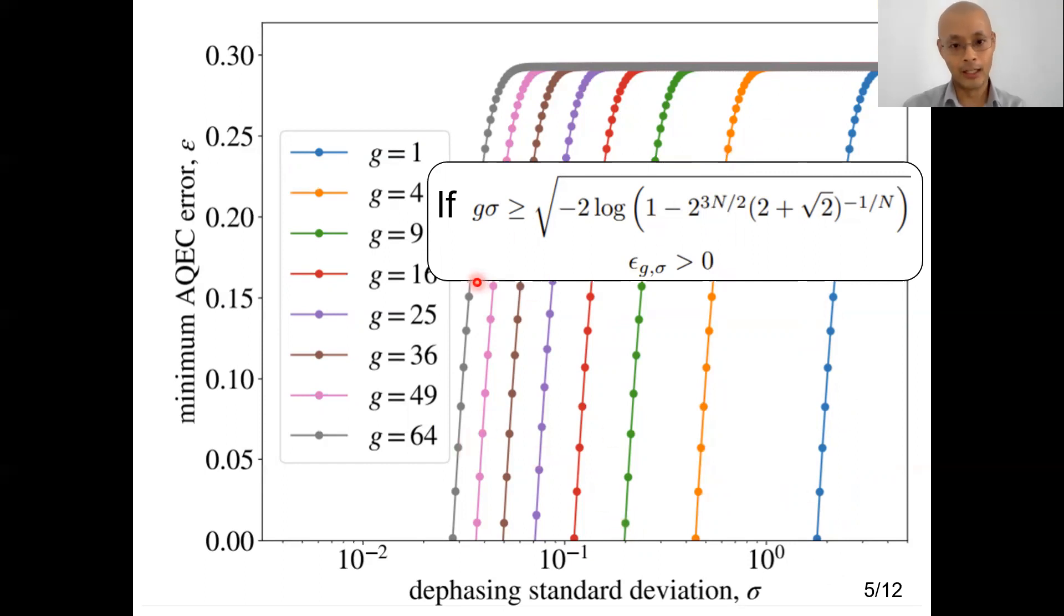And in fact, it is from our theorem we can show that if you multiply g and sigma, this thing over here must be at least this quantity over here. So this means that you can't have simultaneously the shift resilience to be high and the phase resilience to be high. There is a trade-off.